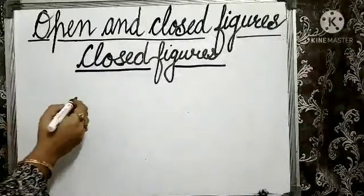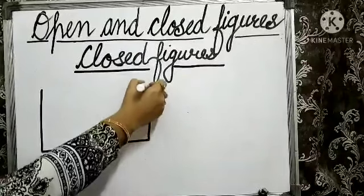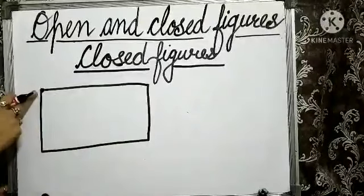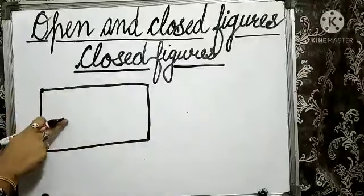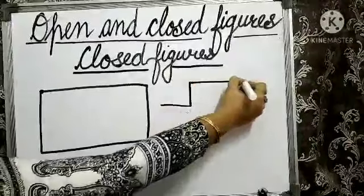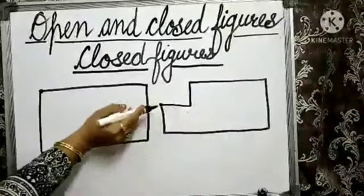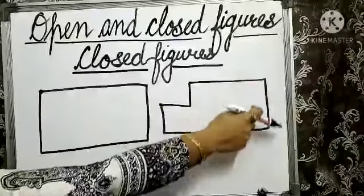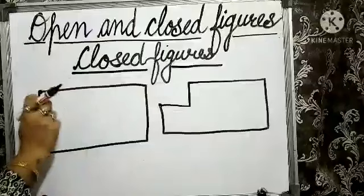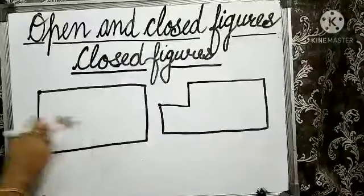Now let us have a glance at a few more examples. Look at this rectangle — this rectangle starts from here and it ends at the same point, so this rectangle is a closed figure. Look at the other example now. This figure starts from this point and it ends at the same point, so this figure is also a closed figure. Figures or shapes having the same starting and end point are called closed figures.